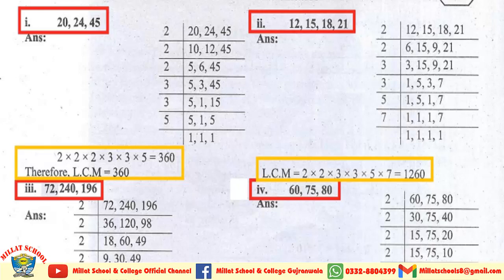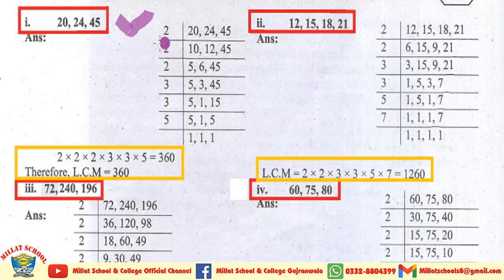Dear students, prime factorization method میں ہم نے sub terms کا separate separate LCM لیا تھا، جبکہ Devian method میں ہم ان سبکا اکٹھا LCM لیں گے اور ان کے درمیان commas لکھیں گے۔ Question number 2 کا part 1 دیکھیے — یہاں ہمارے پاس 3 numbers ہیں: 20, 24 اور 45۔ ان کو ہم سب سے پہلے least prime number یعنی 2 سے divide کریں گے۔